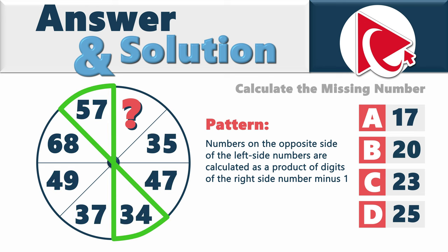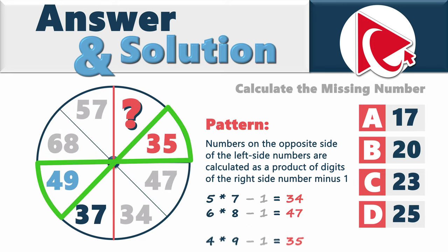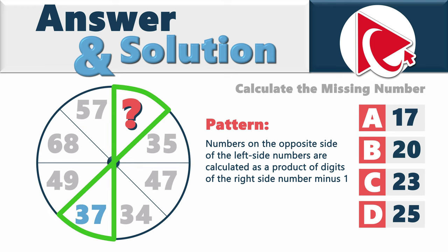At 11 o'clock we see number 57. 5 multiplied by 7 minus 1 brings us to 34, which is the calculated number on the opposite side. Let's apply the same principles: 6 multiplied by 8 minus 1 equals 47. 4 multiplied by 9 minus 1 equals 35. Now for the missing number: 3 multiplied by 7 minus 1 equals 20. So the correct answer is choice B, 20.